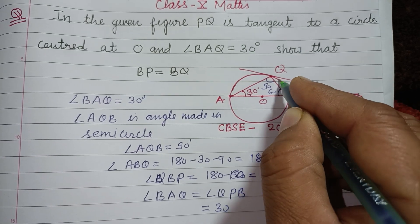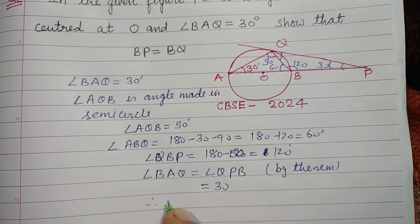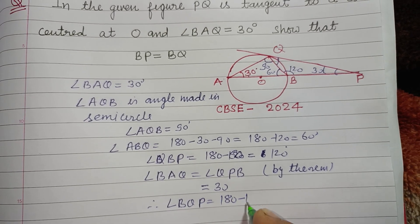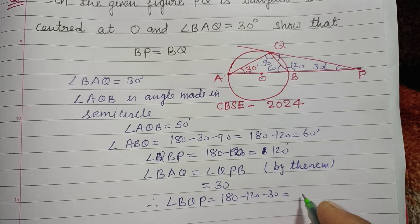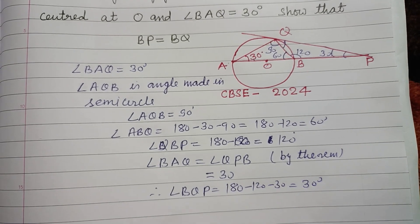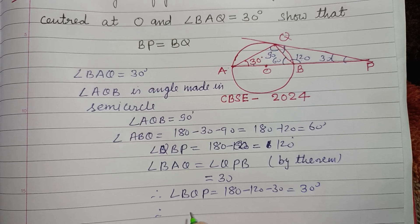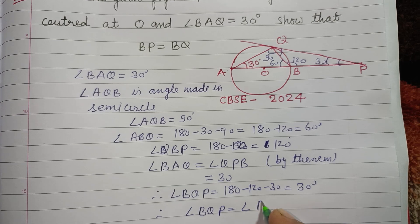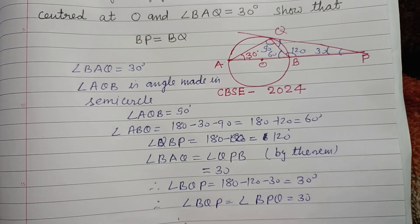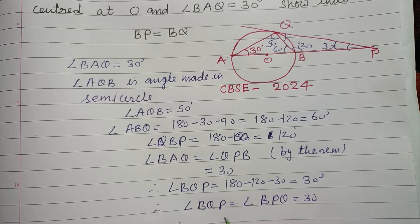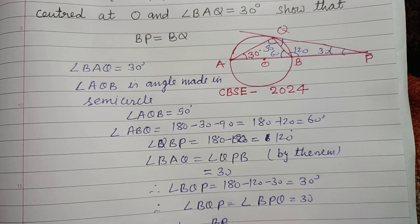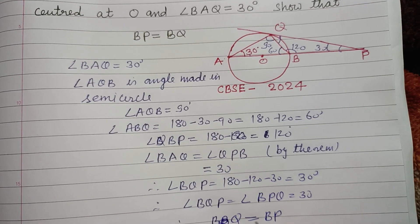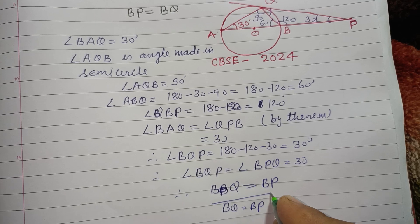30 plus 120 is 150, and this is also 30. Therefore angle BQB equals 180 minus 120 minus 30, which is 30 degrees. Since angle BQB equals angle BPQ equals 30 degrees, the opposite sides are also equal. Therefore BQ equals BP. It is proved.